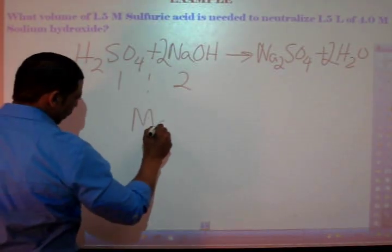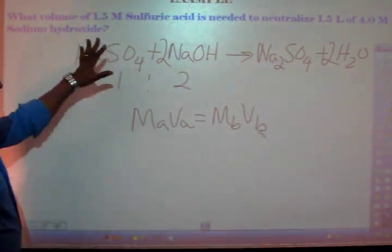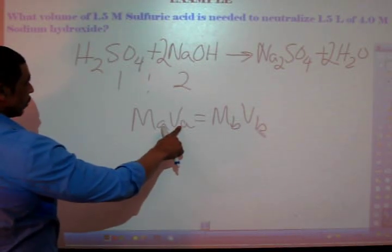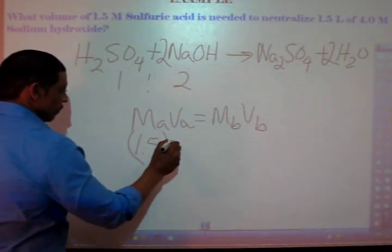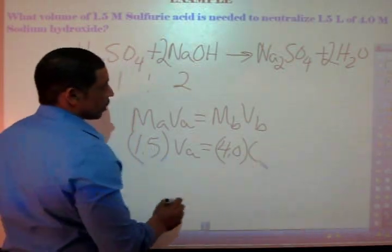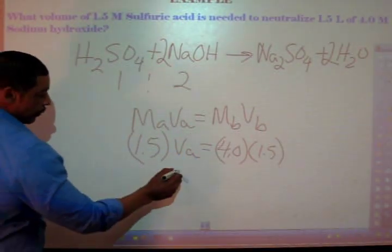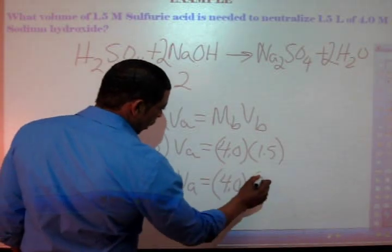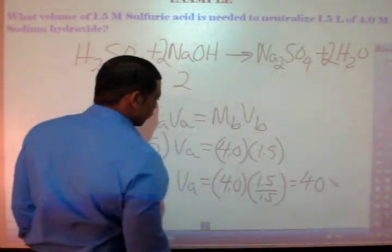Now we simply write our titration formula and plug in our values. The question is asking for the volume of the acid. So the V-A is unknown. We do know, however, that the molarity of the acid is 1.5. We also know that the molarity of the base is 4.0. And of course the volume of the base is 1.5. Solving for V-A, we simply multiply 4.0 times 1.5 over 1.5. This gives an answer of 4.0 liters.